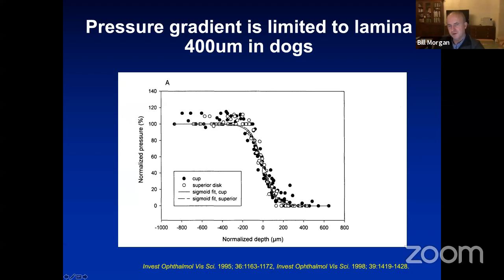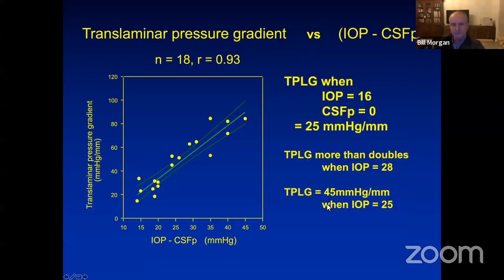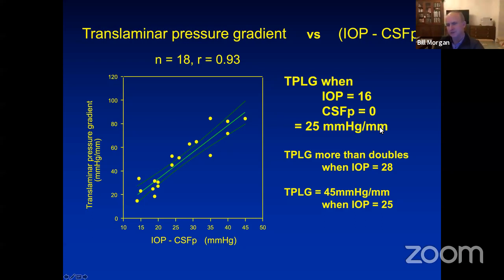The pressure always fell across the lamina cribrosa. We could calculate the pressure gradient—that is, the pressure drop per millimetre of tissue in the animals—and typically it was about 25 millimetres of mercury per millimetre of tissue. It more than doubled when the intraocular pressure increased to 28 millimetres of mercury, compared to an intraocular pressure of 16.